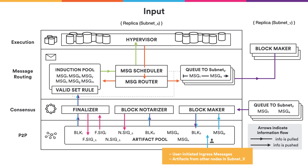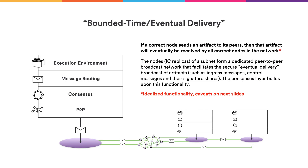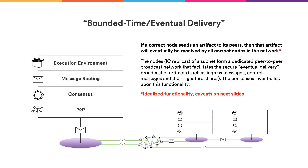The peer-to-peer layer guarantees that if a correct node sends an artifact to its peers, then that artifact will eventually be received by all correct nodes in the subnet. This can be viewed as a special case of reliable broadcast, tailored for our consensus algorithm, with priorities, and under some network assumptions it provides bounded time delivery.